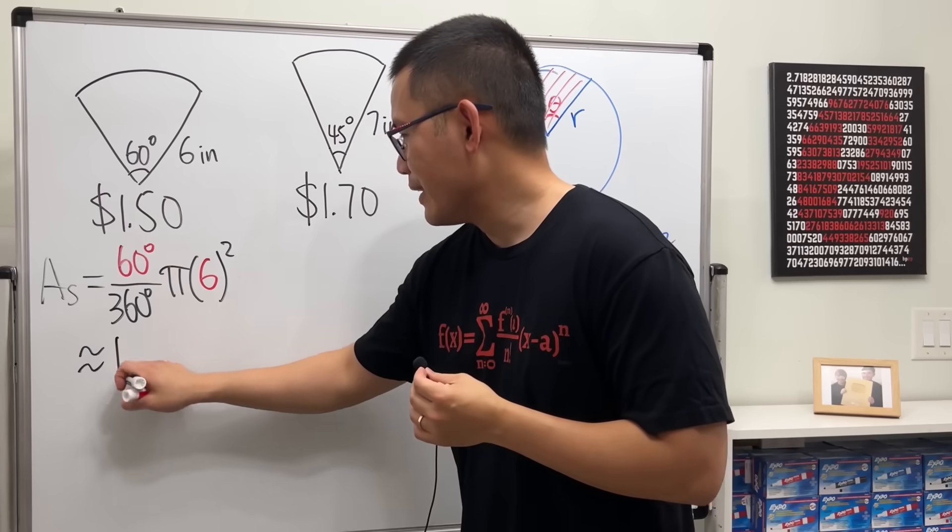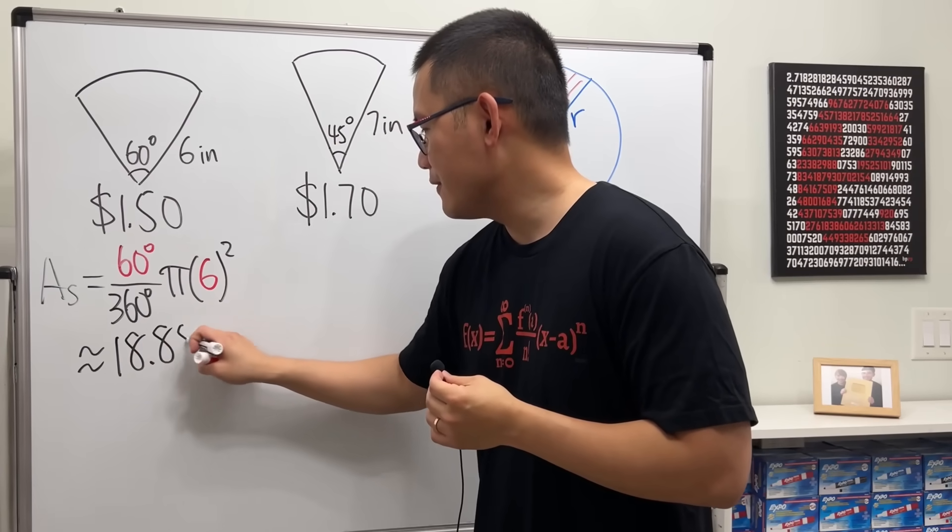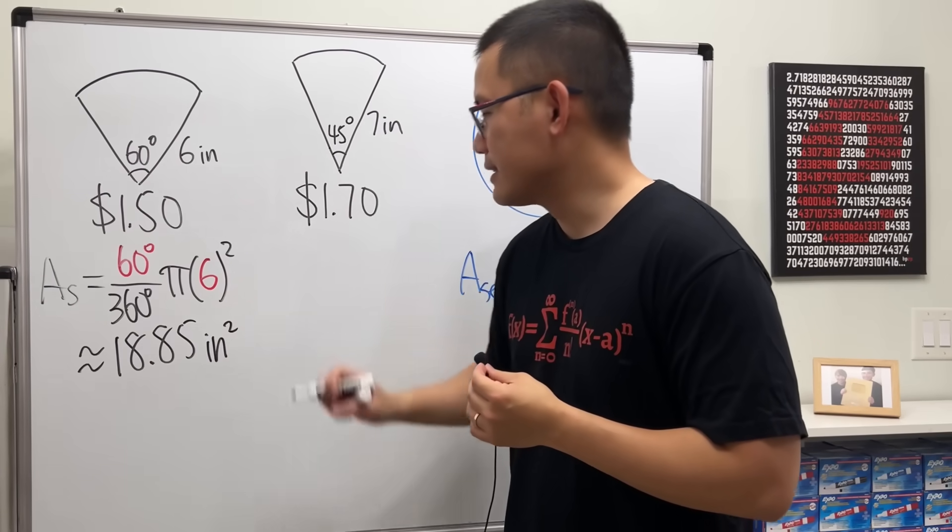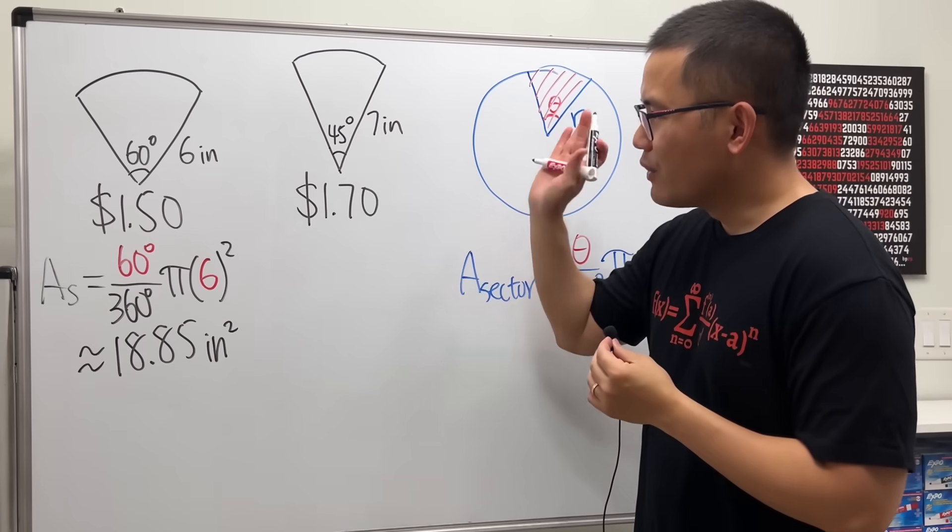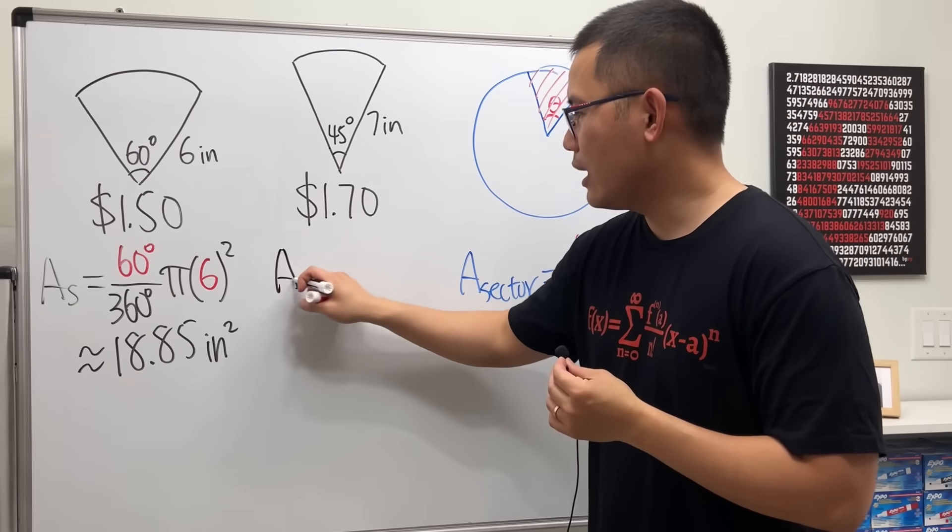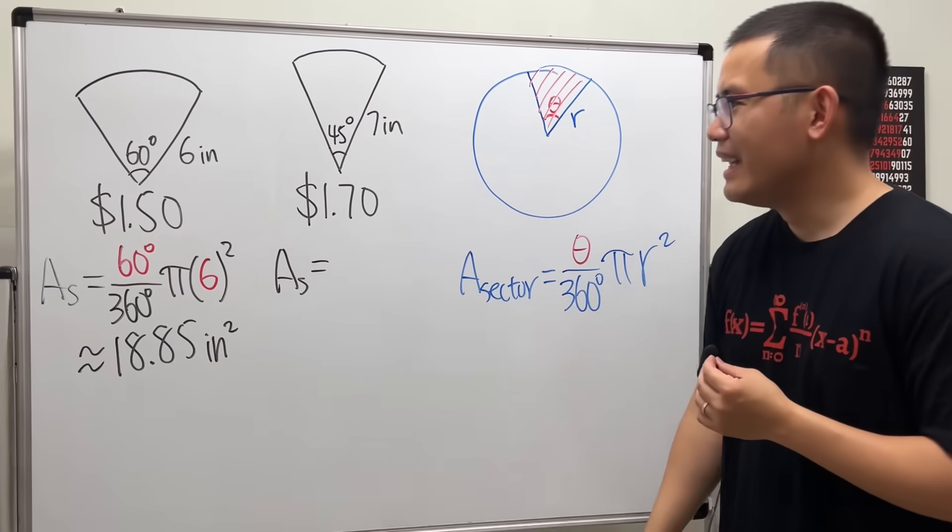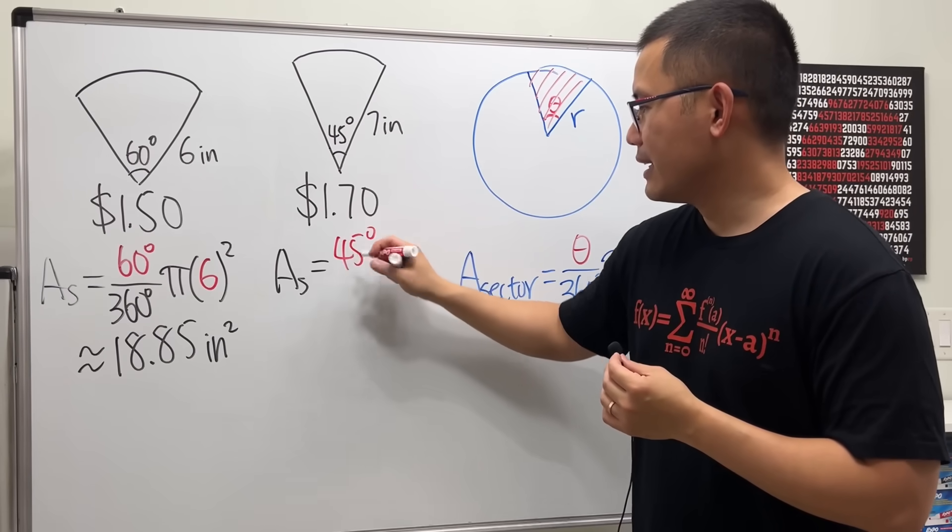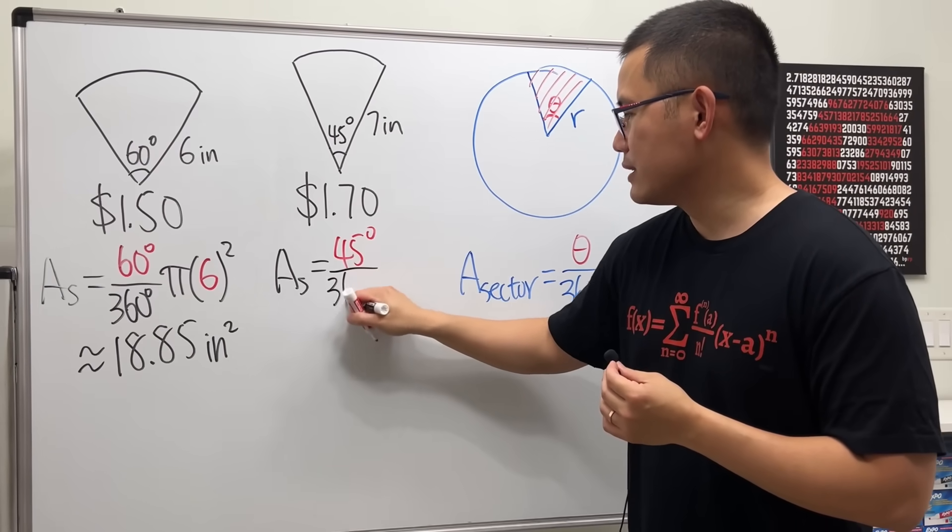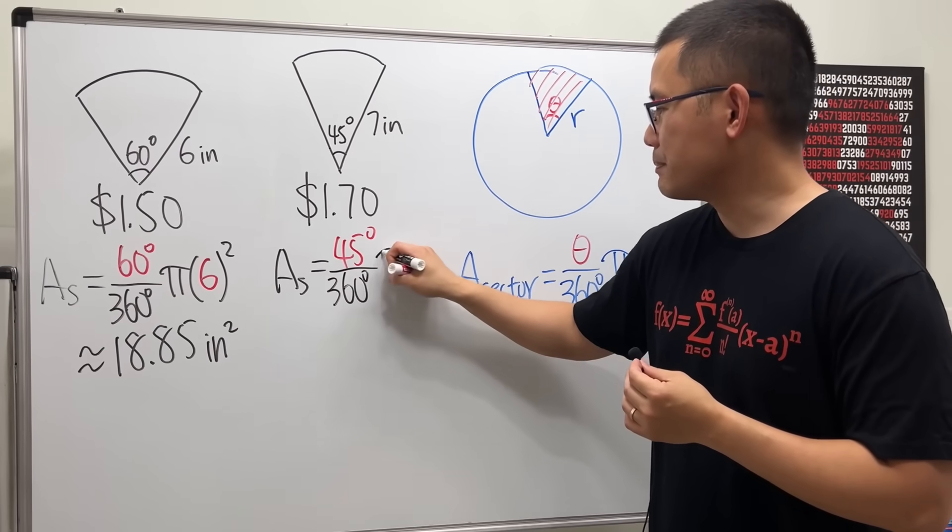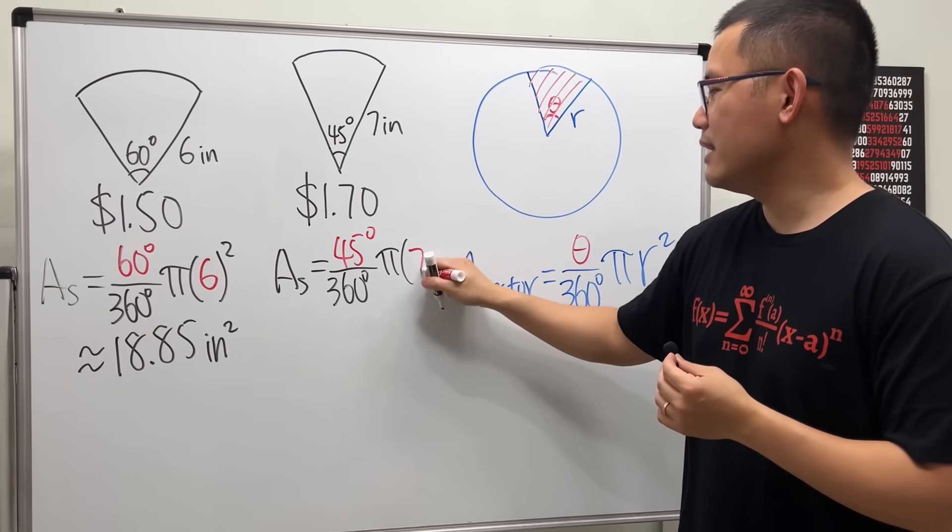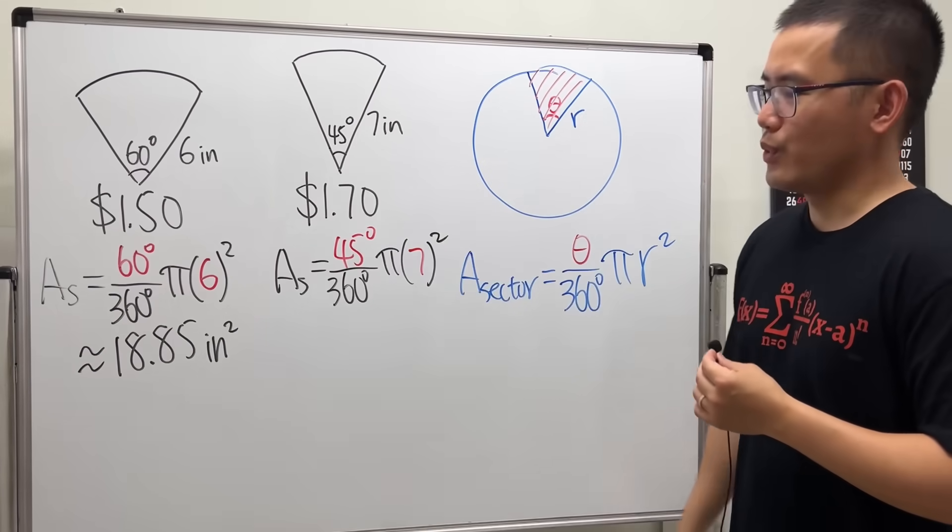For the other one though, the area of this slice of pizza, this sector, 45 degrees divided by 360 degrees times pi times the radius which is 7, and we square that.